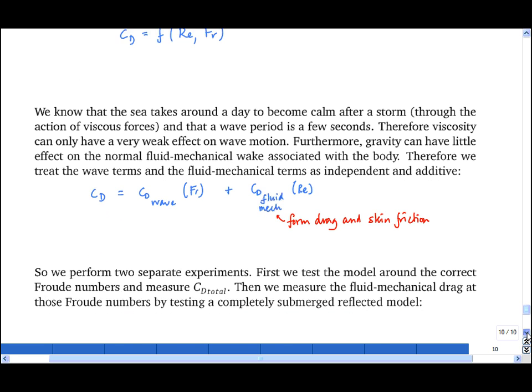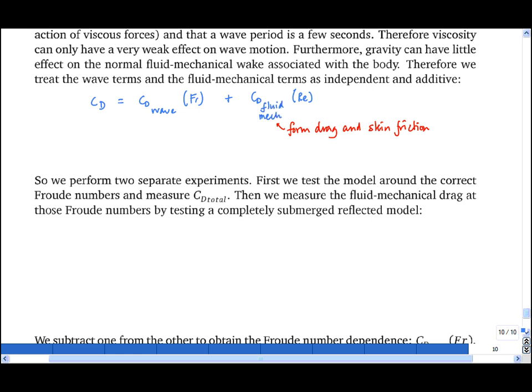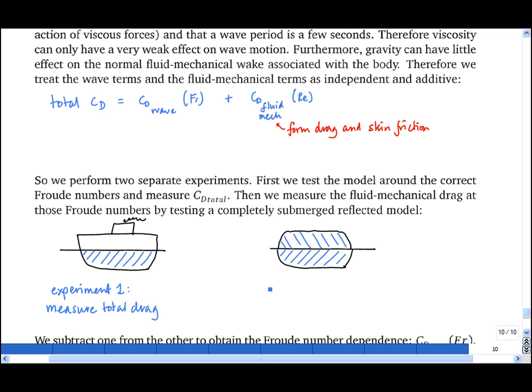Having decided to do that, we perform two separate experiments. First, we test the model around the correct Froude number and measure the drag in total. Here's a diagram of that. Now for the next experiment, we take the underwater shape, that is the bit of the boat that is actually in contact with the water, and we create its mirror image and stick it together. In experiment two, we measure the fluid mechanical drag on this body when it's fully submerged. This means we can eliminate the wave drag from this experiment. Then we subtract the fluid mechanical drag from the total drag in order to get the wave drag.